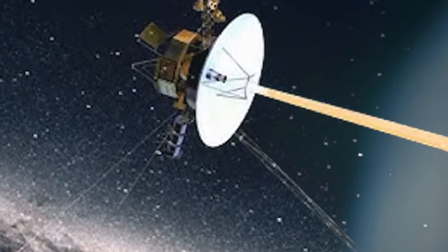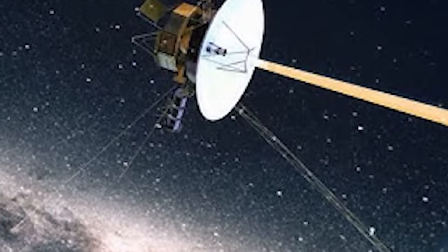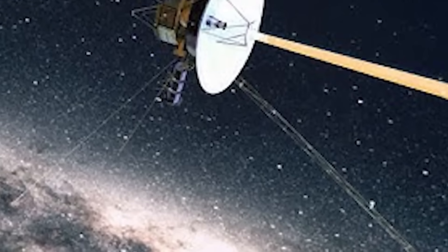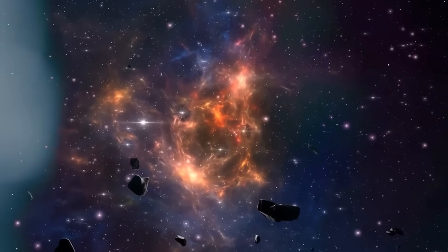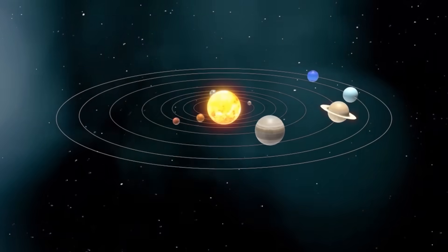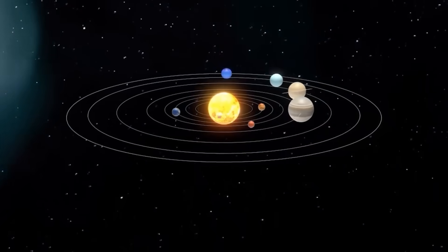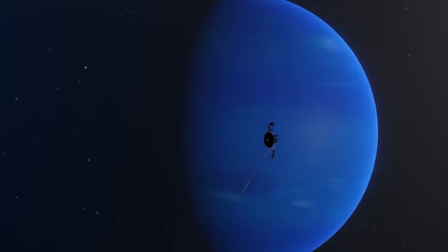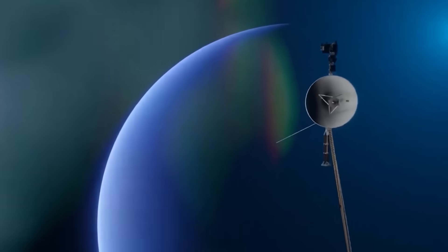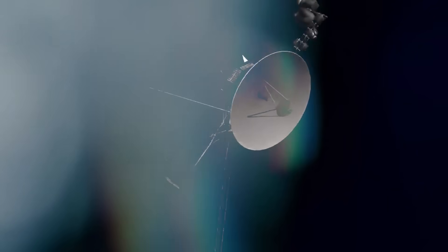Attached to Voyager 2 is a message, a golden disk etched with humanity's greetings, sounds, music, and diagrams. A beautiful attempt at interstellar diplomacy. But within that disk are detailed instructions, how to locate Earth, how to read the disk, how to understand who we are. For decades, this was celebrated as a symbol of hope. But in light of Voyager 2's discoveries, some now see it differently.